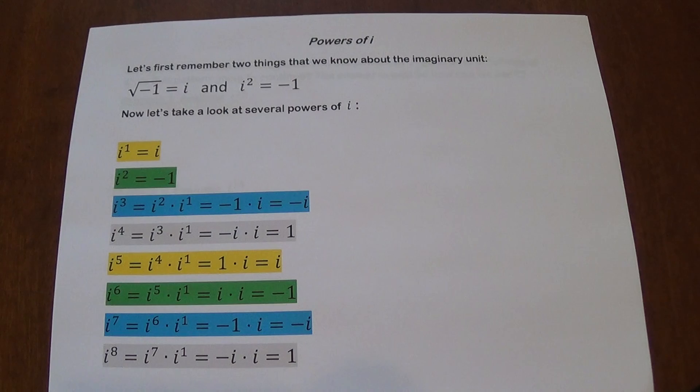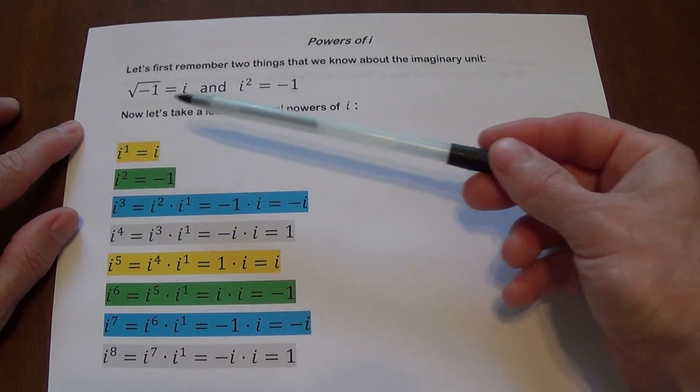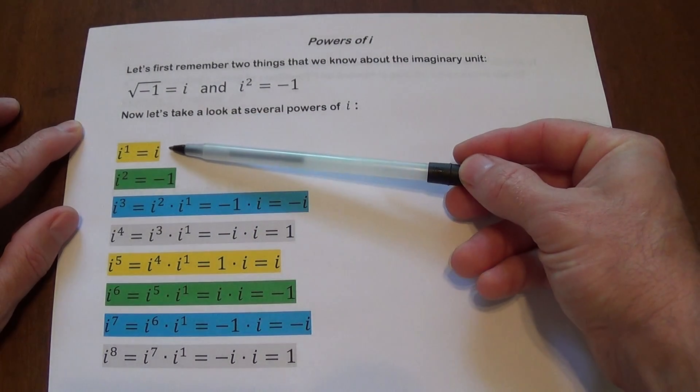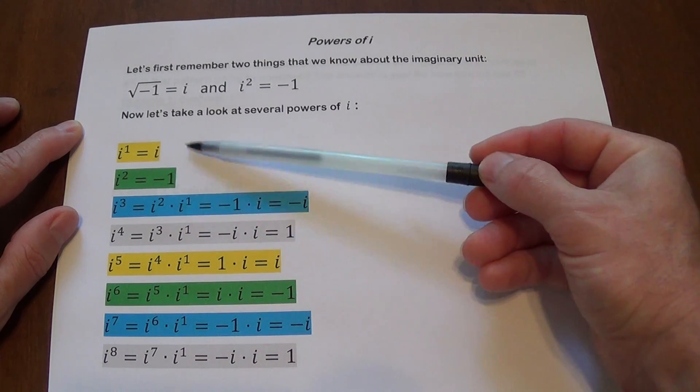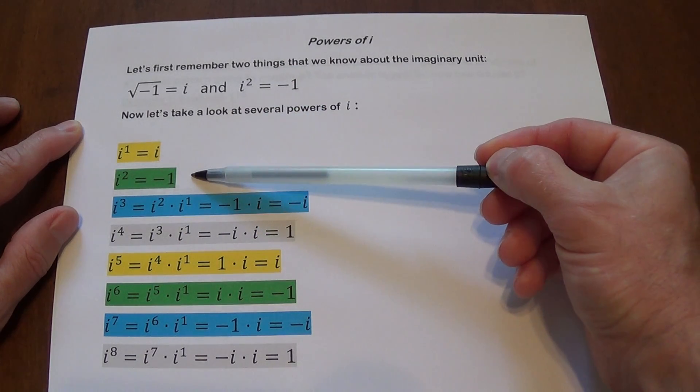We're going to take a look at several powers of i, starting with one. Obviously, i to the first power is the same as i. i squared, as we know from here, is negative one.